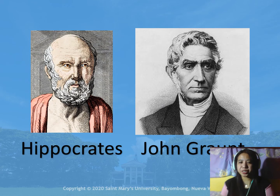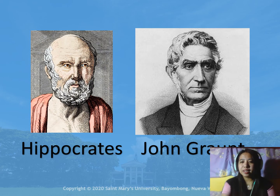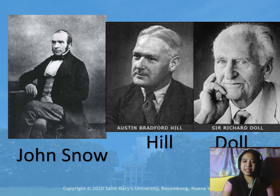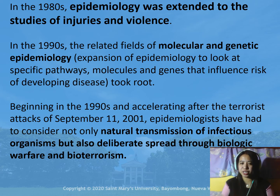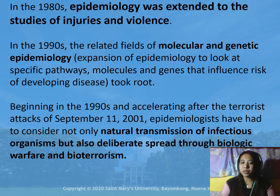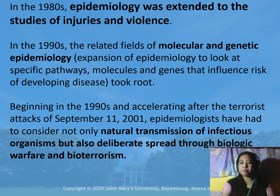Here are pictures of the persons behind epidemiology: Hippocrates, John Graunt, John Snow, Hill, and Doll. Moreover, in the 1980s, epidemiology was extended to the study of injuries and violence. In the 1990s, they also considered molecular and genetic epidemiology. Beginning in the 1990s, with the terrorist attack of September 11, 2001, epidemiologists considered not only natural transmission of infectious organisms, but also spread through biological warfare and bioterrorism.